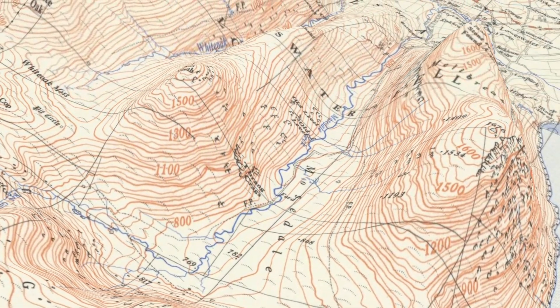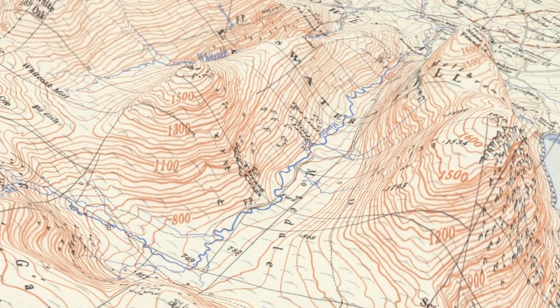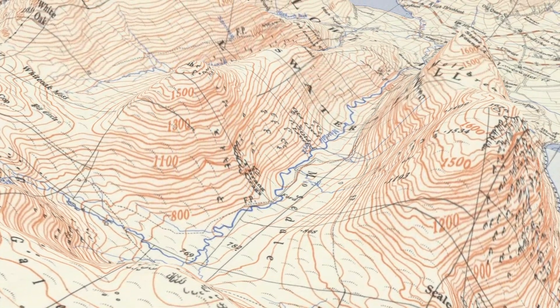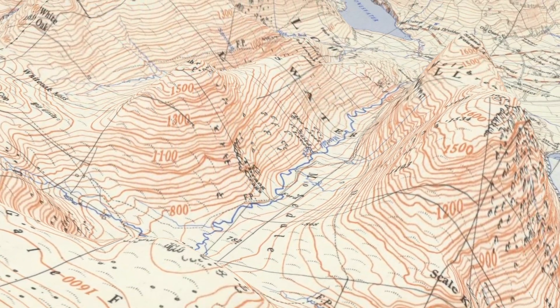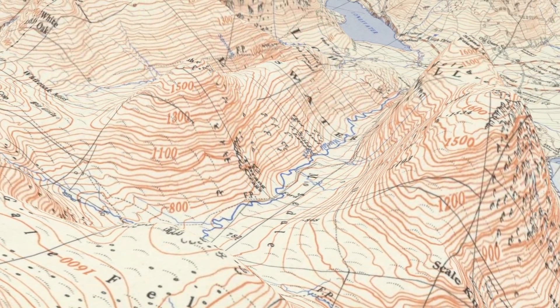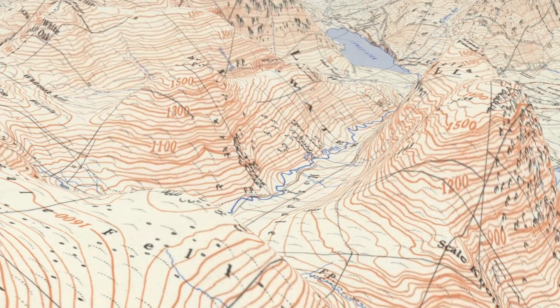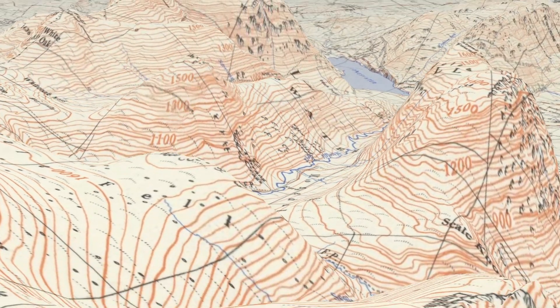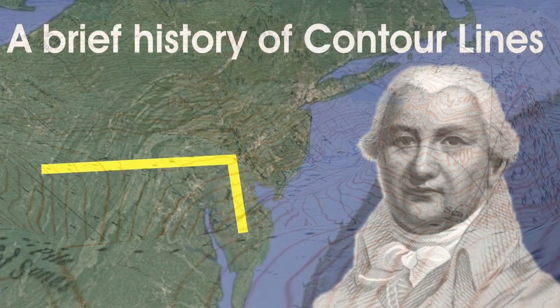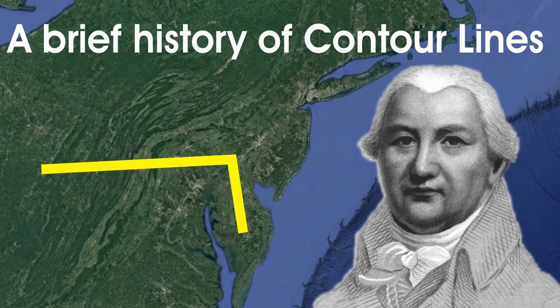This method of showing heights on maps was invented by Charles Hutton in 1774. They were actually invented because there was a small war going on in what would later become the USA. I've done a video about how contour lines were invented — I'll put a link in the description box if anybody's interested.